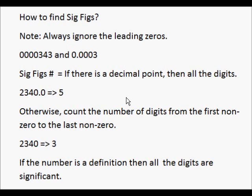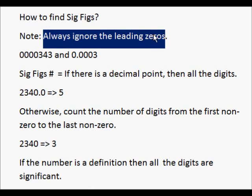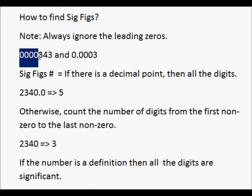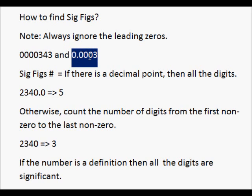How do you find significant figures? Well, the first thing you want to do is always ignore the leading zeros — always ignore them. So on these, we want to ignore the first zeros, and the first zeros on these as well.